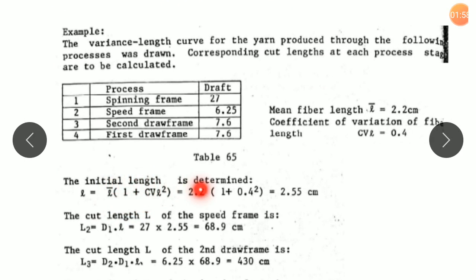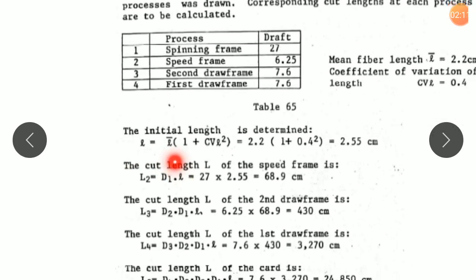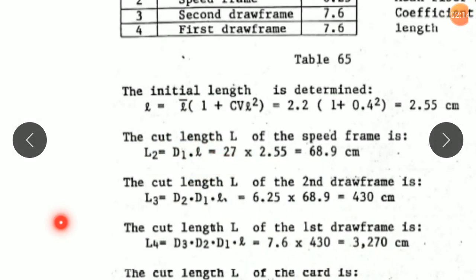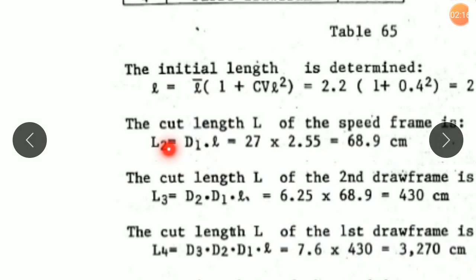The initial length is 2.55 cm. The cut length corresponding to speed frame L₂, because ring frame represents the first process, equals D₁ × L. So draft in ring frame is 27 multiplied by initial length 2.55, which works out to be 68.9 cm.